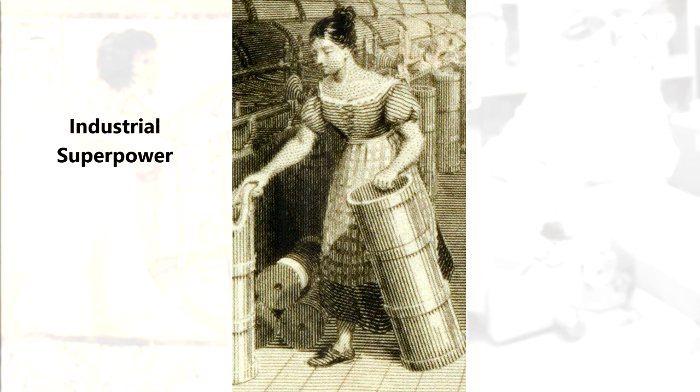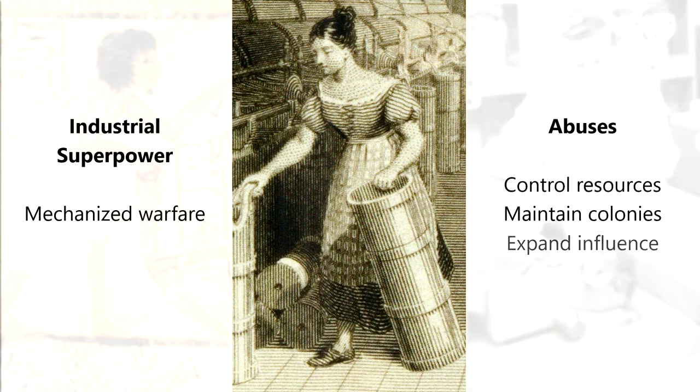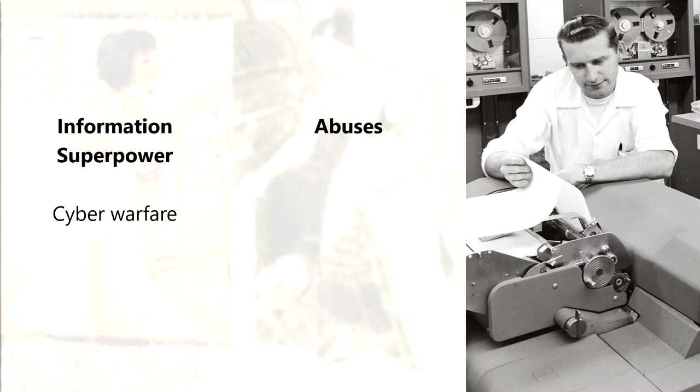Industrial societies gained the ability to mechanize warfare. They misused this superpower to control resources, maintain colonies, and expand their political influence. Information societies gained the ability to wage cyber warfare. We've definitely misused this new superpower with mass surveillance, industrial sabotage, and election tampering.